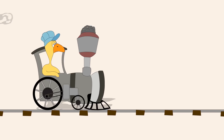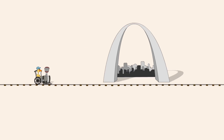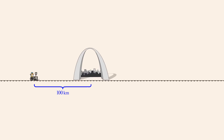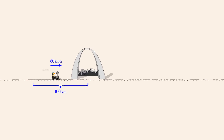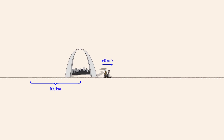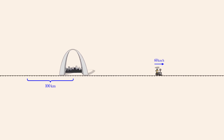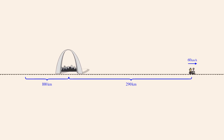As an example, let's say that we are on a train 100 kilometers west of St. Louis, traveling east at 60 kilometers per hour. How long will it take us to travel 290 kilometers east of St. Louis? We know from our formula that speed times time equals distance. Since we know the speed and total distance, we should have enough information to calculate the total travel time.